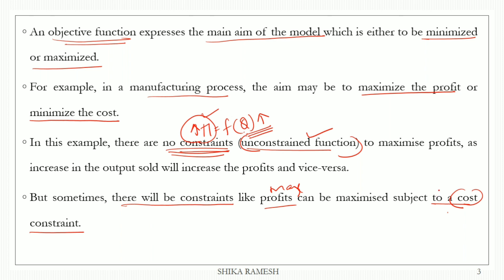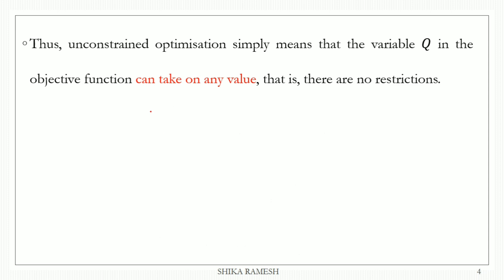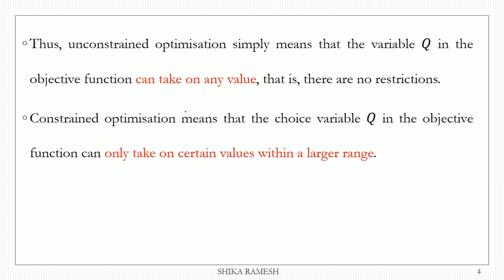This is the unconstrained function with variables. In this way, we have the objective function control variables, limit variables, and constraint variables — that means constraint optimization. The objective function node has one constraint and one constraint problem.